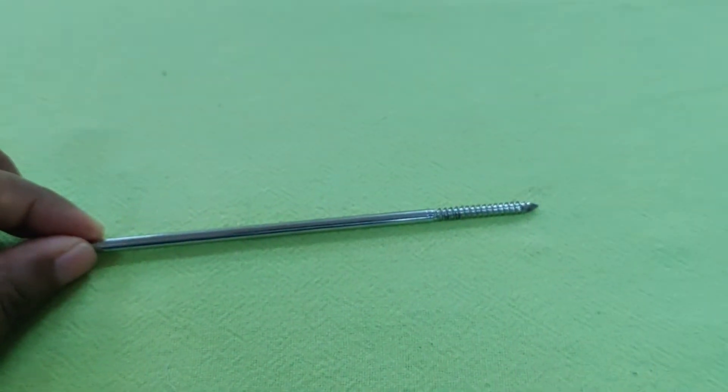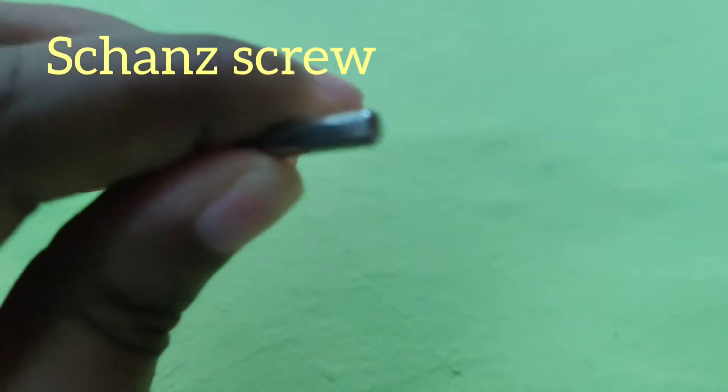Today we will discuss about external fixator and the components of an external fixator. First one is a shine screw.